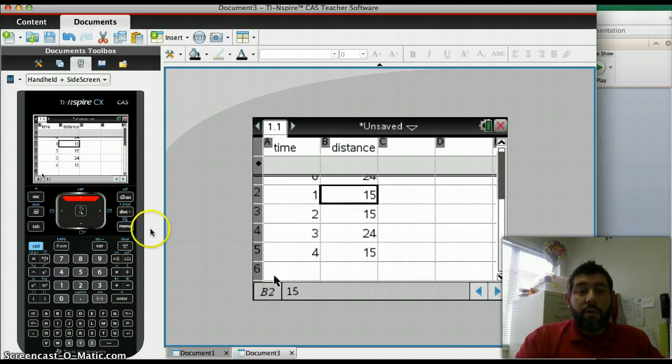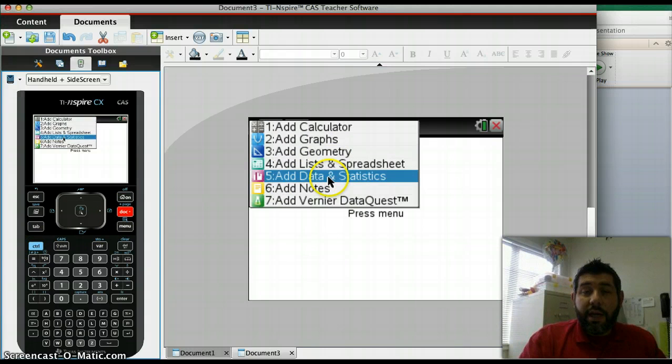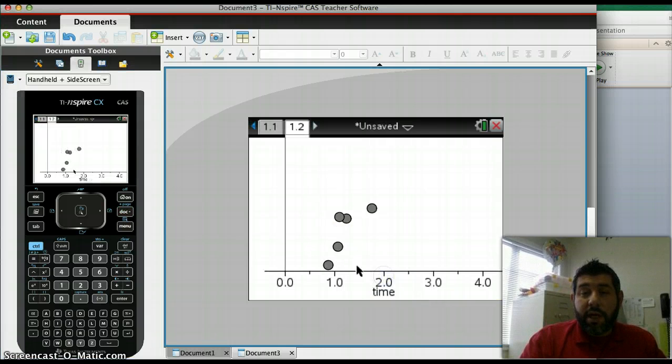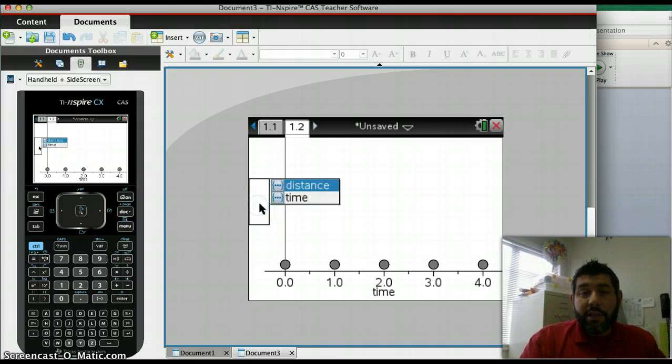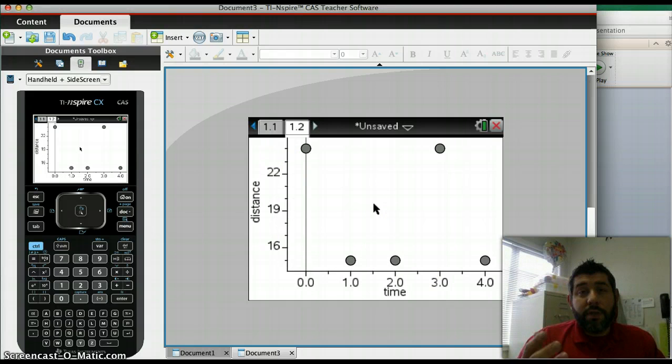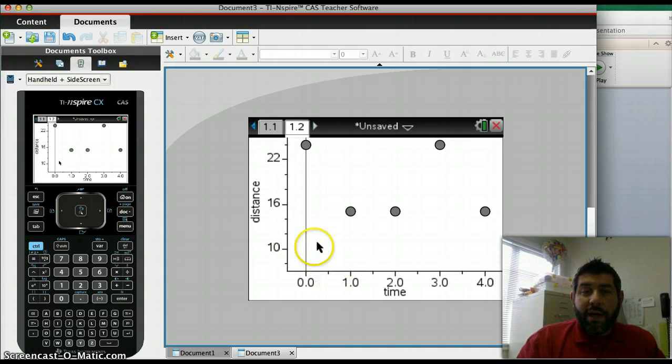All right. So now that we have this, we're going to do a new page with data and statistics. And we're going to go down. We want this to be time on the X axis and distance on the Y axis. And look, it looks kind of, it does look very similar to what we had before. Let's go ahead and pull this over here. All right. Cause we know that it should go down to 12, right?